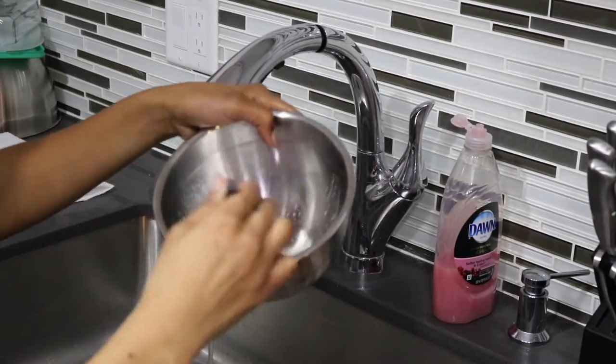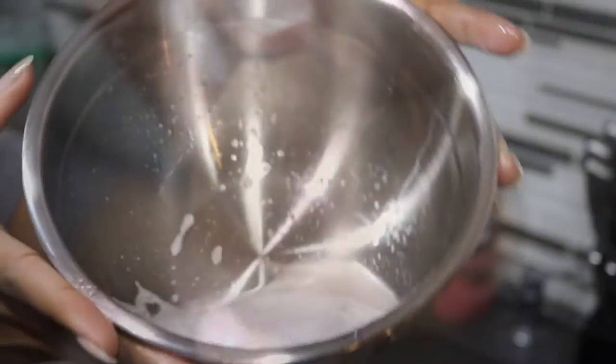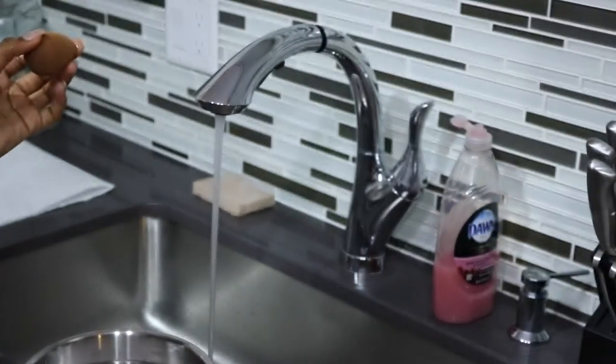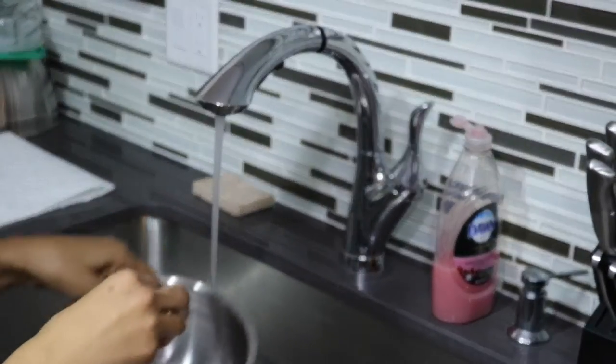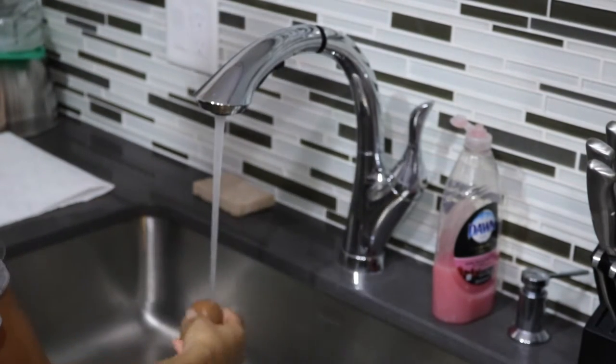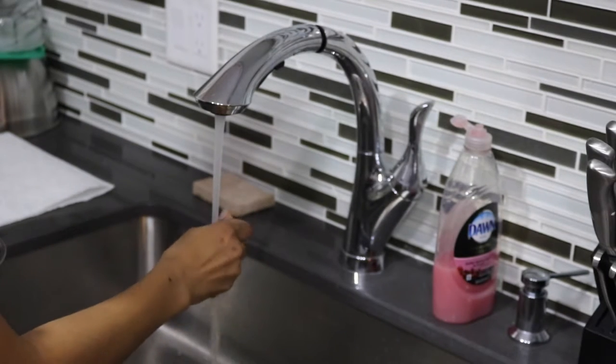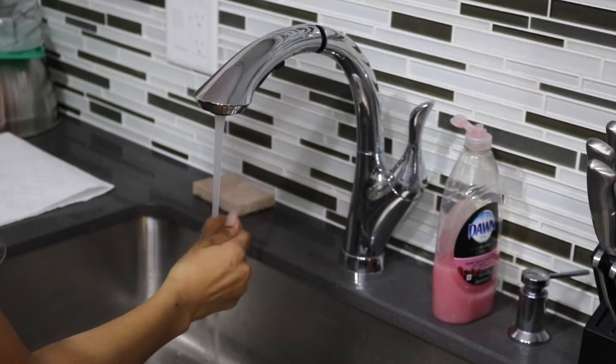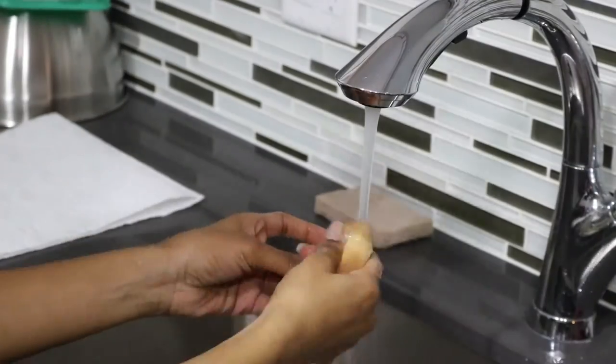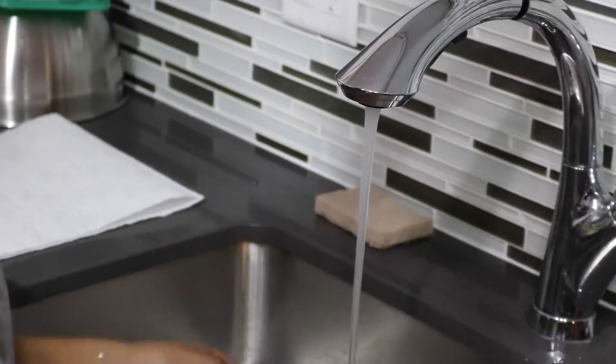For makeup sponges, just dip it into the mixture and massage the makeup out of the sponge. You want to be careful not to dig your nails into it, but also be thorough enough to make sure you're getting all that makeup out. You might have to dip it in a couple of times.